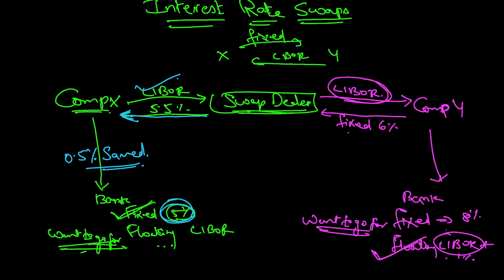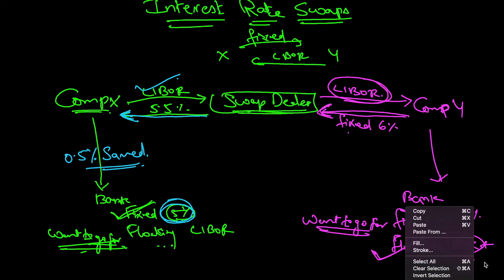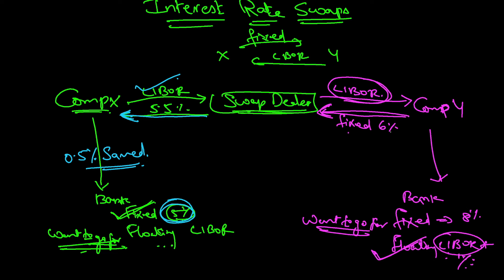Here is how this works: Company Y is supposed to pay LIBOR plus 1% to the bank, and they receive LIBOR from the swap dealer — so the LIBOR cancels out regardless of where rates go. Their net cash outflow is 6% to the swap dealer plus 1% to the bank, totaling 7%. If they had gone directly for the fixed rate, they would have paid 8%. So Company Y saves 1% through this swap arrangement.